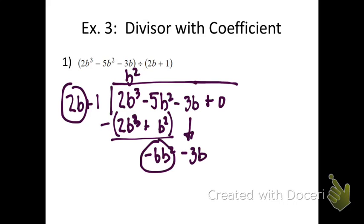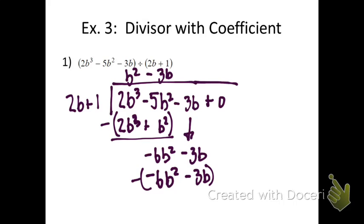Next thing I ask: how many times do I multiply 2b to get negative 6b squared? I multiply it by negative 3b. Negative 3b times 2b is negative 6b squared, and negative 3b times 1 is negative 3b. This is the same expression as the one right above it, so we subtract and we know it's going to be 0. There's no remainder here, so we stop there. Our answer is b squared minus 3b.